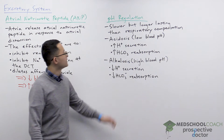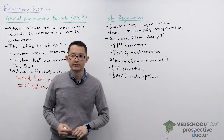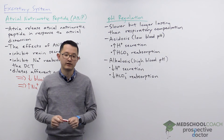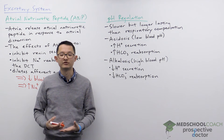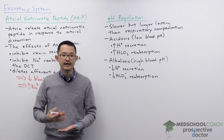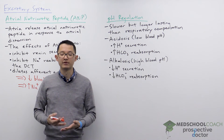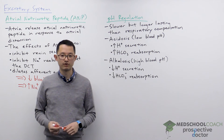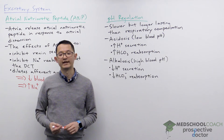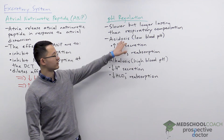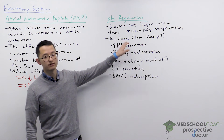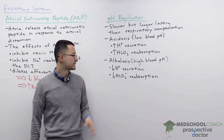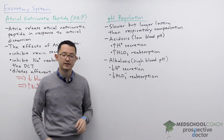Now let's talk about pH regulation. pH regulation is looking at how the body is able to maintain a fairly constant blood pH value. There are some situations where blood pH may decrease, which is called acidosis, or when the blood pH increases and we get alkalosis.